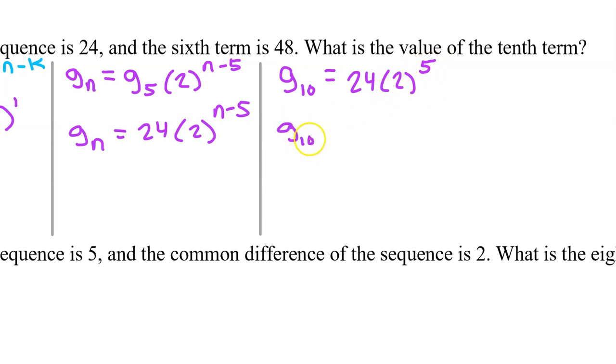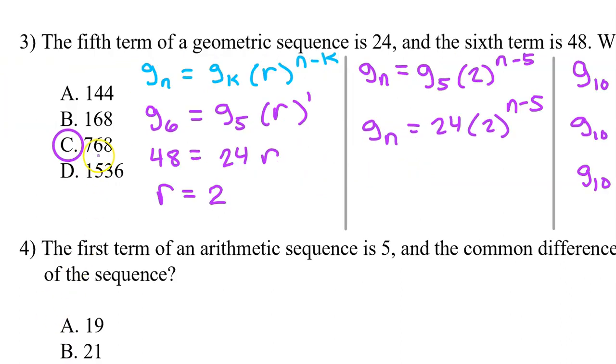So, that means the tenth term will be whatever 24 times 32 is. That turns out to be 768. So, the answer is C.